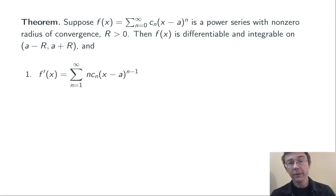And even better, the derivative can be done term by term, so the derivative of that power series is the sum from n equals 1 to infinity, nc_n, x minus a to the n minus 1.